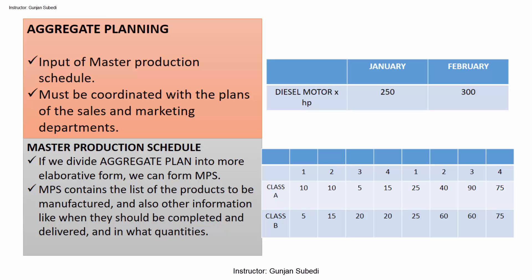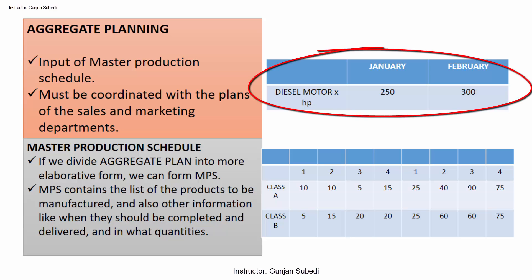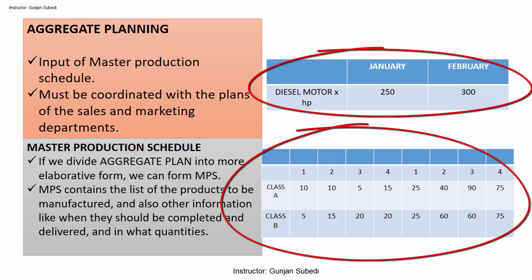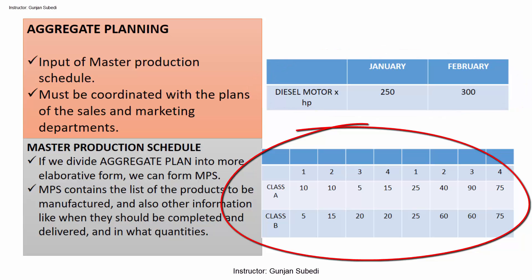To give you a quick overview, understand aggregate planning as an input of the master production schedule. Suppose we have a project of manufacture of diesel motor engines of a particular capacity. For the months of January and February, we have an overall helicopter view plan. Keep in mind the aggregate plan must be coordinated with the plans of the sales and marketing departments. If we divide this into a more elaborative form depicting the number of parts to be produced each week, or each model of the motor to be produced, we have the more elaborative master production schedule.